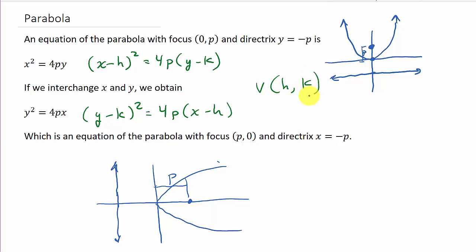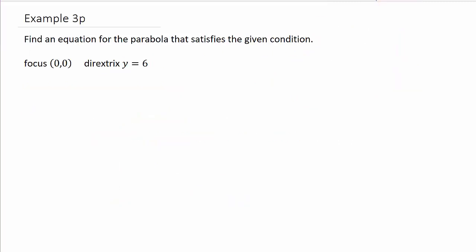Alright, so let's go ahead and take a look at an example. They want us to find an equation for the parabola that satisfies: the focus is zero, zero, and the directrix is y equals 6. And that's a typo, that should be a c there. Alright, so first thing we want to do is let's just sketch it and see what we're dealing with.